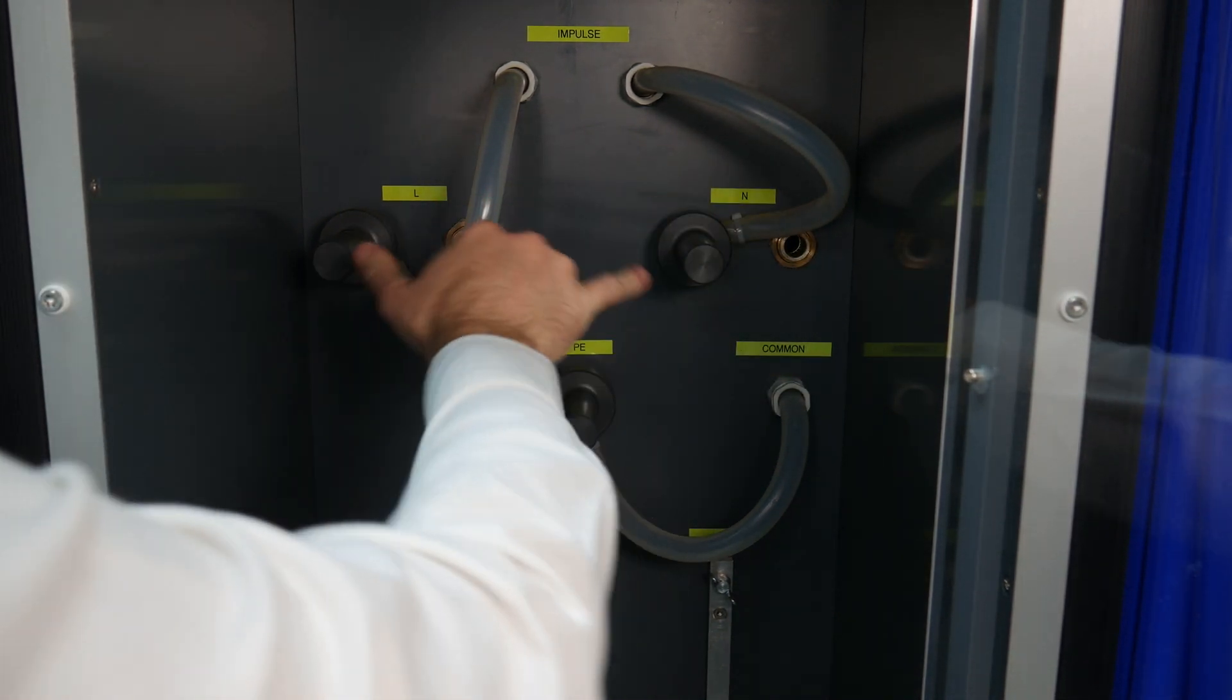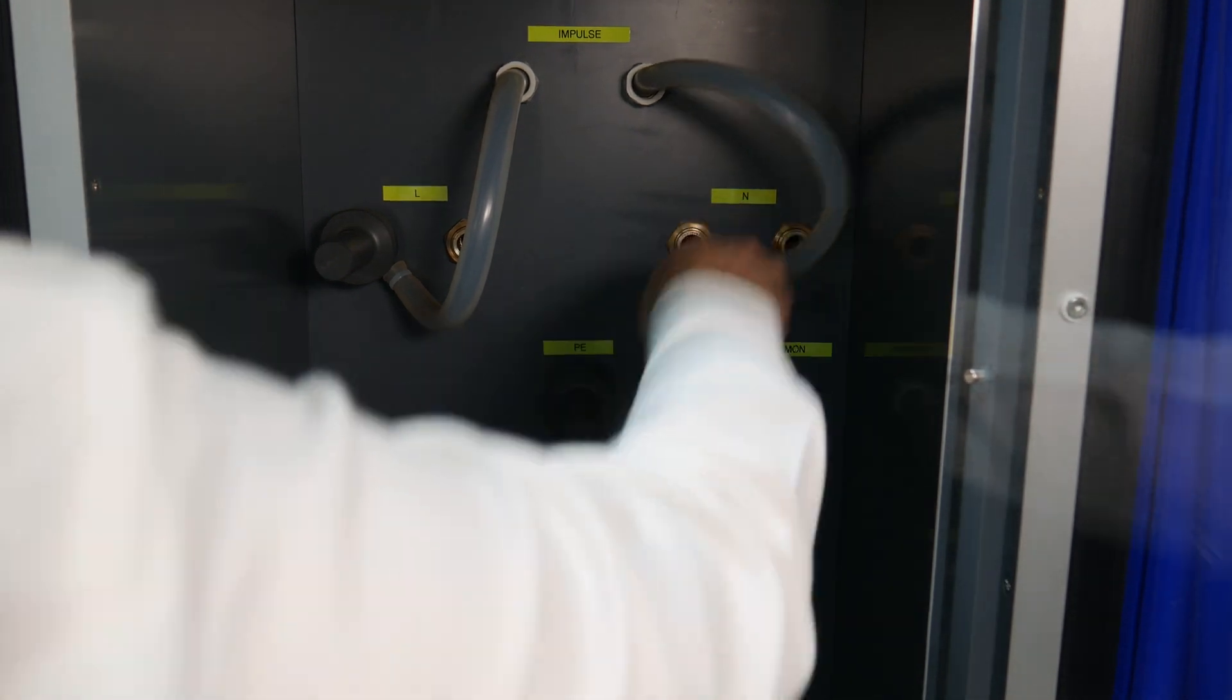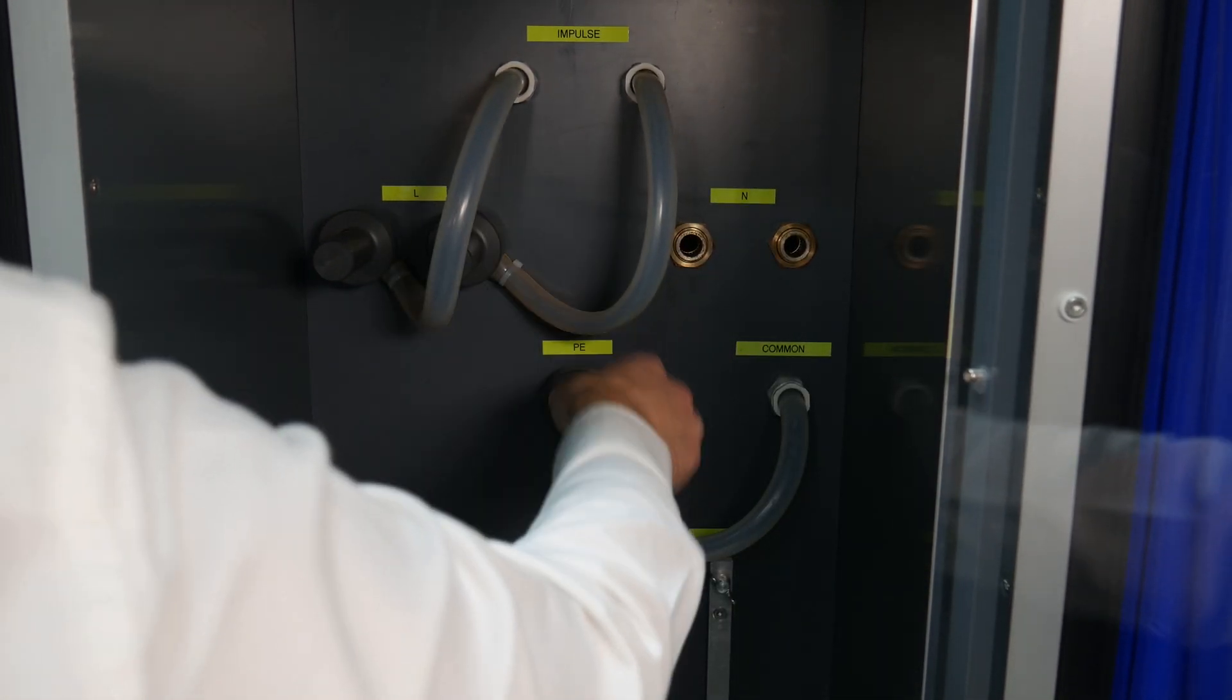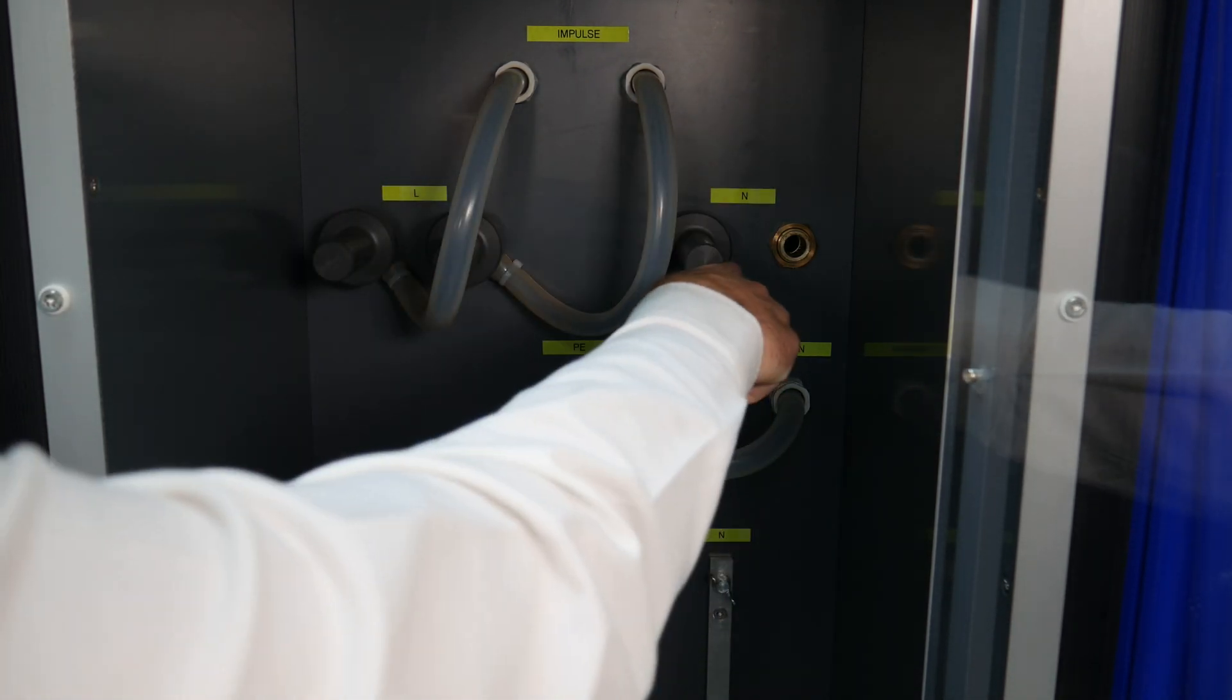Now we're doing line and neutral impulse in reference to ground. Or if we want to couple from line to neutral we would change our jumpers here like so. Line to neutral.